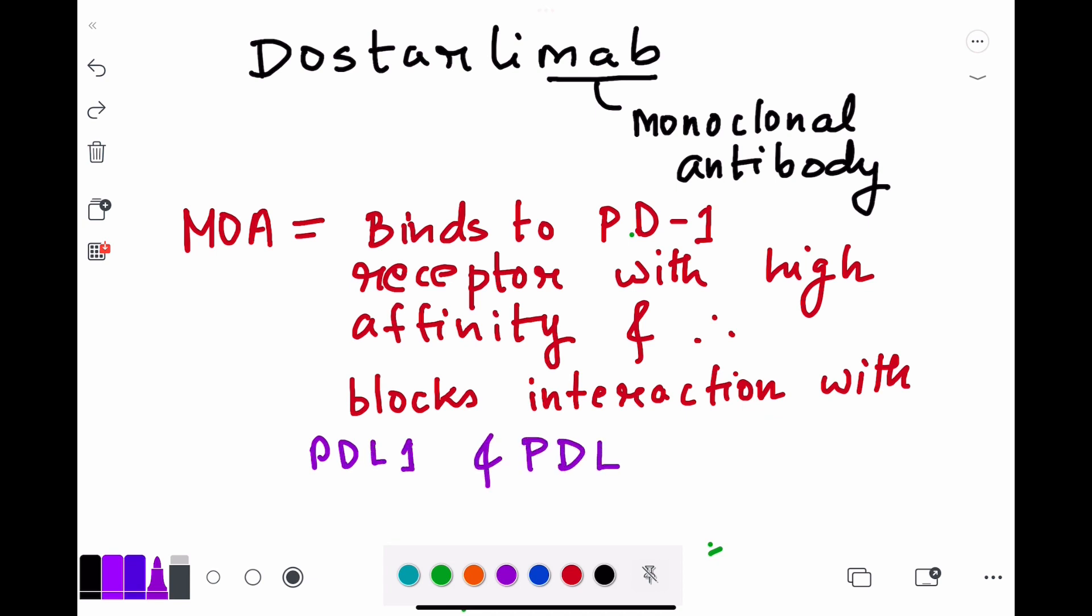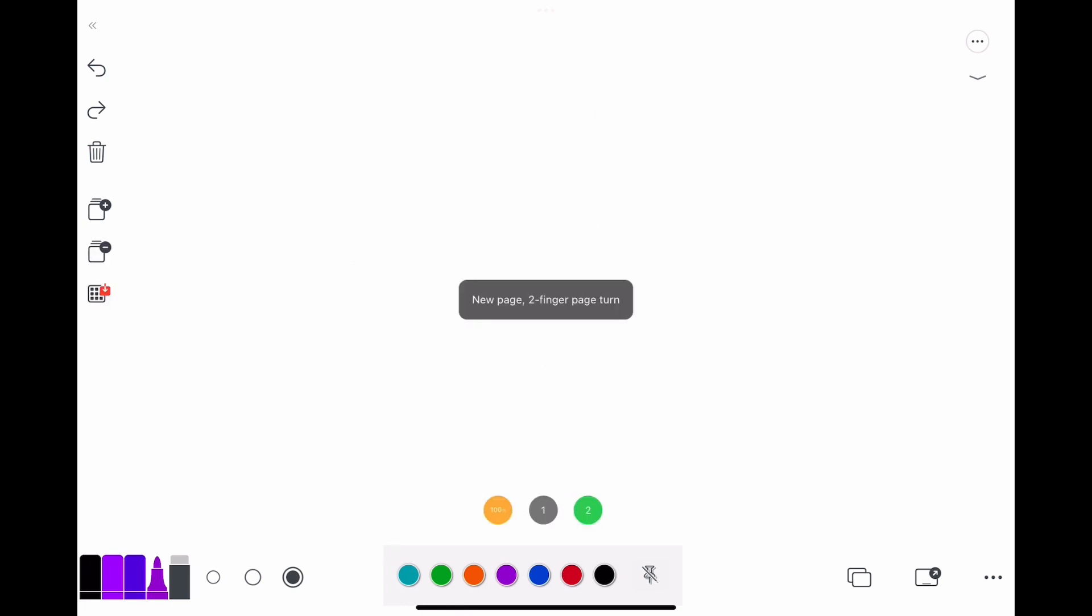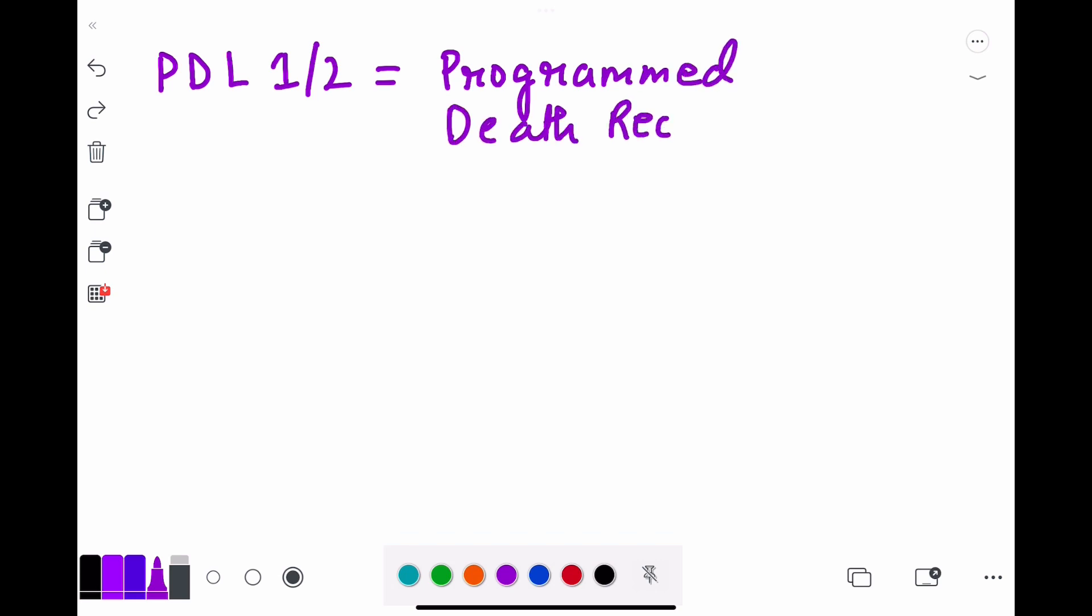Now coming to what does this mean - so PD-1, PDL1 or L2, these are actually programmed death receptor ligands. These are expressed by tumor cells. The tumor cells that are defective express these ligands PDL1 and L2.